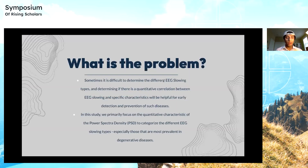The problem is that it is difficult to determine the different EEG slowing types, and determining if there is a quantitative correlation between EEG slowing and specific characteristics will be helpful for early detection and prevention of such diseases. In this study, we primarily focus on the quantitative characteristic of the power spectral density, or PSD, to categorize the different EEG slowing types, especially those most prevalent in degenerative diseases.